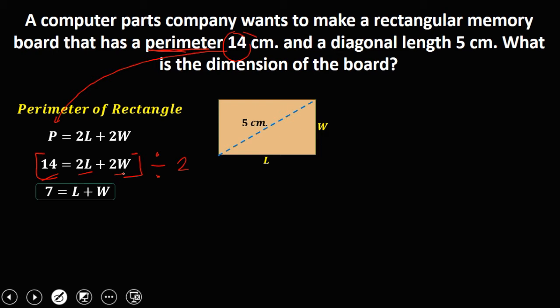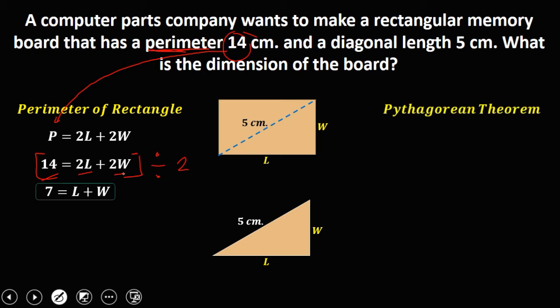For the second equation, since there is a right triangle and the values, we have 5 cm, the length and the width. In solving a right triangle, we're going to use this Pythagorean theorem. The C squared equals A squared plus B squared. C is the hypotenuse, that's the longest side.